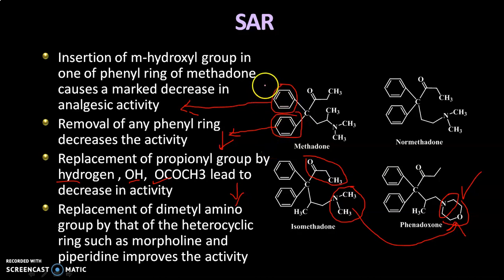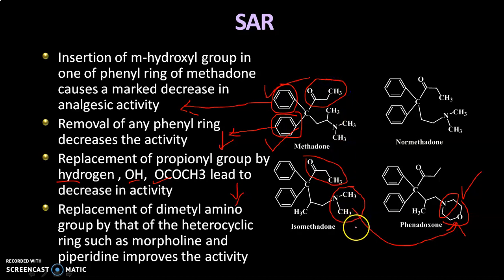To summarize the SAR: insertion of a hydroxyl group on the phenyl ring decreases activity; replacement of the phenyl ring with a heterocyclic ring decreases activity; any substitution on the propionyl group decreases activity; and the only modification that increases activity is cyclizing the dimethylamino group into a morpholine ring. Thank you for watching this lecture — if you have any queries, feel free to write in the comment box.